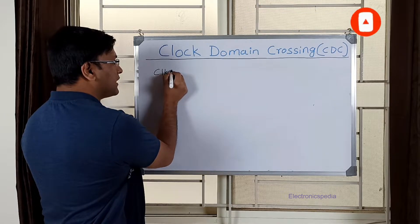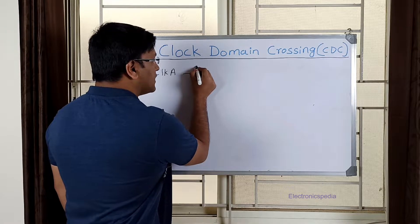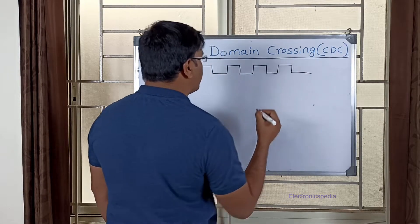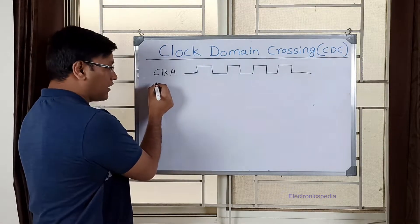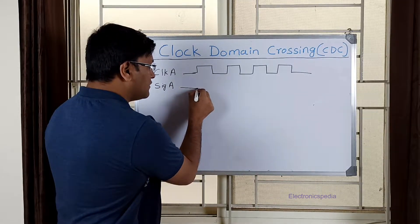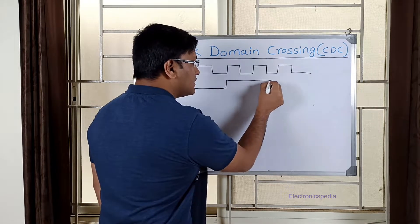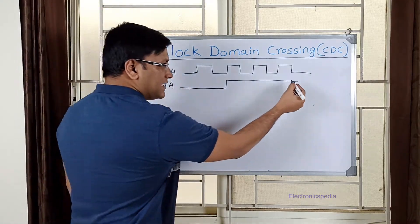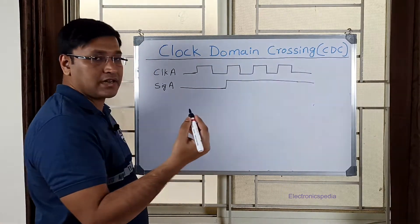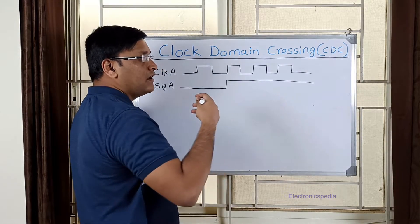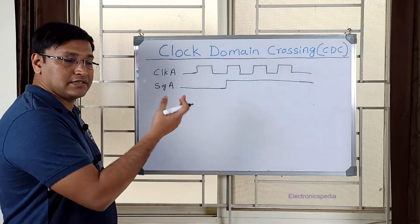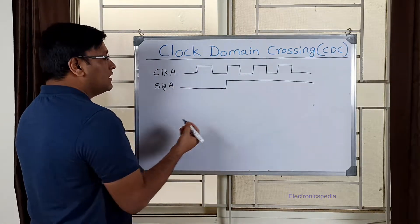Let me draw Clock A — this is how it looks. Now I have a signal, let me call it Signal A. This is a level signal, which is essentially a quasi-static signal. It has either a zero value or a one value for an elongated period — it has a sufficient time period for which it stays at a constant value, either zero or one. Such signals are called level signals.